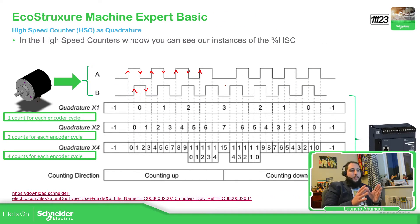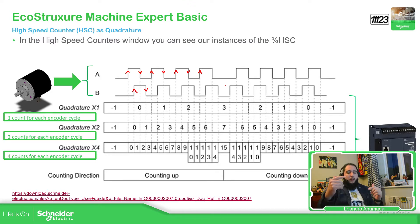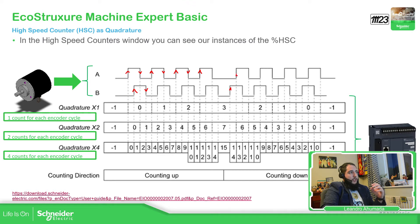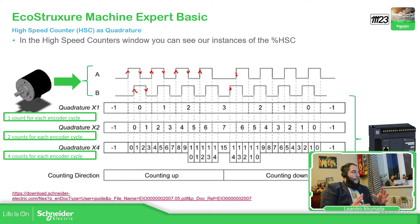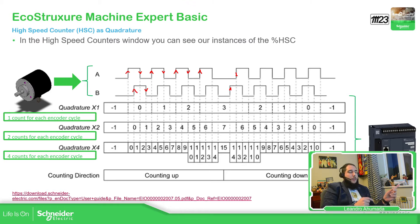So we have the normal counting based on the rising edge of A for per one, or rising and falling edge of A for per two. The direction is given by phase B: if phase B comes before phase A, it counts down; if B comes after A, it counts up. You select per one, per two, or per four to multiply the number of pulses received. Now we're going to configure the application from the previous video to see how the count changes with each mode.